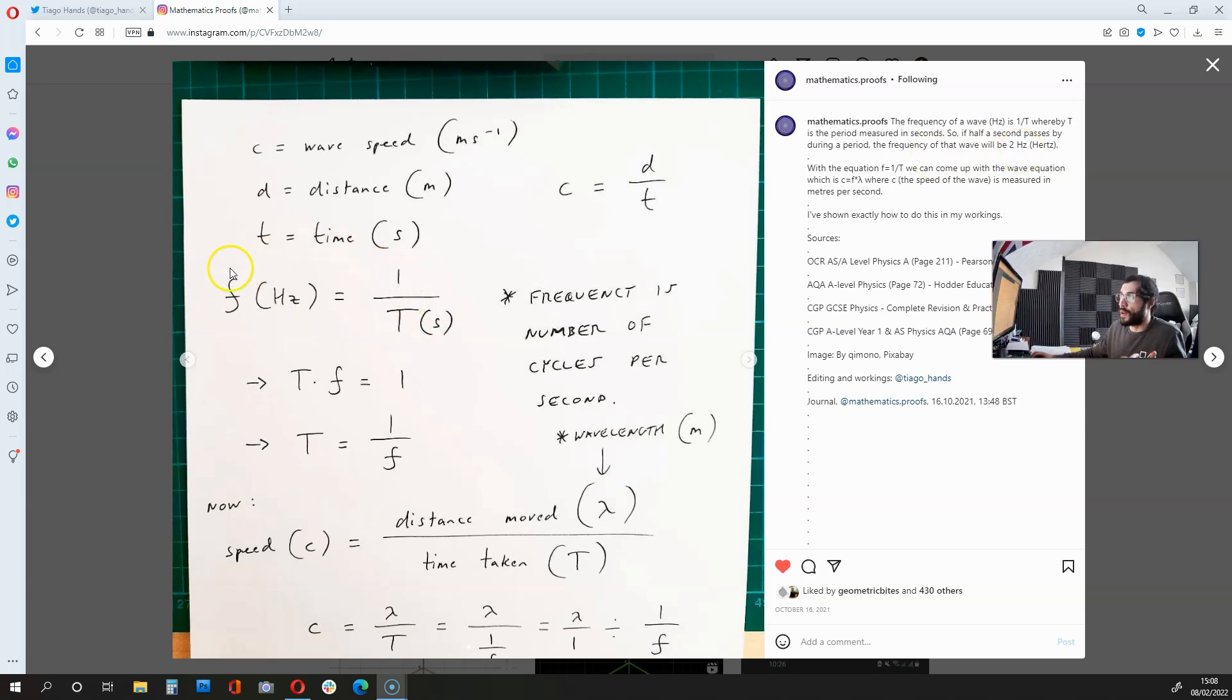Now, this frequency equation over here is useful, because with it, we can come up with the wave equation, which is c equals f times lambda, whereby lambda is the wavelength of the wave measured in meters, and where c is the speed of the wave, which is measured in meters per second.